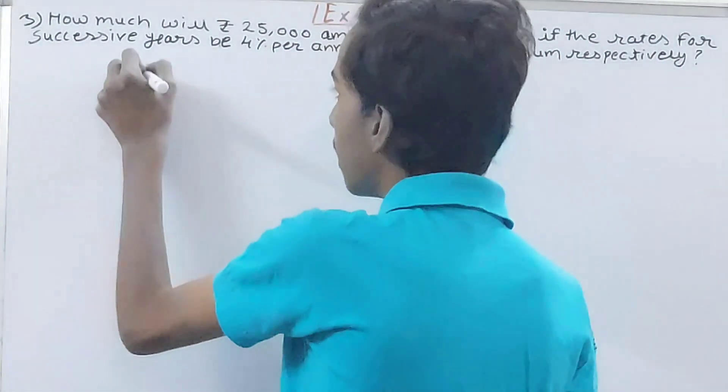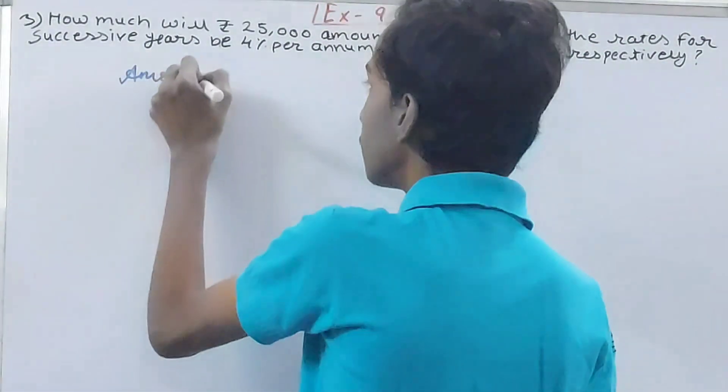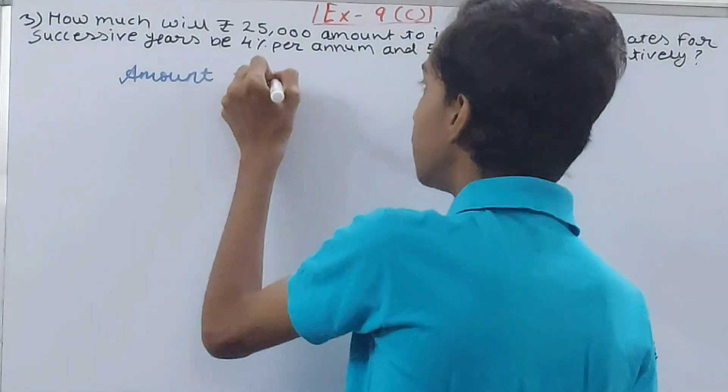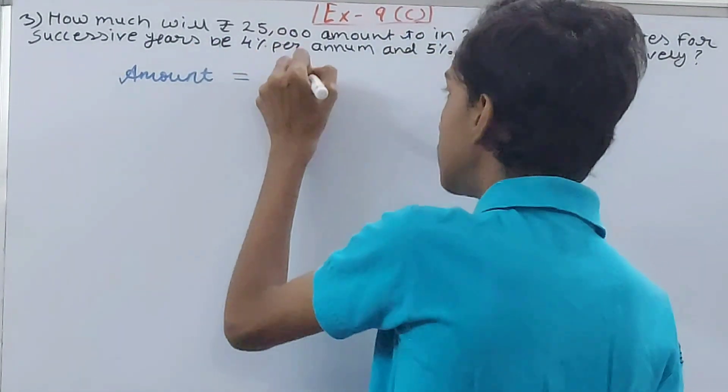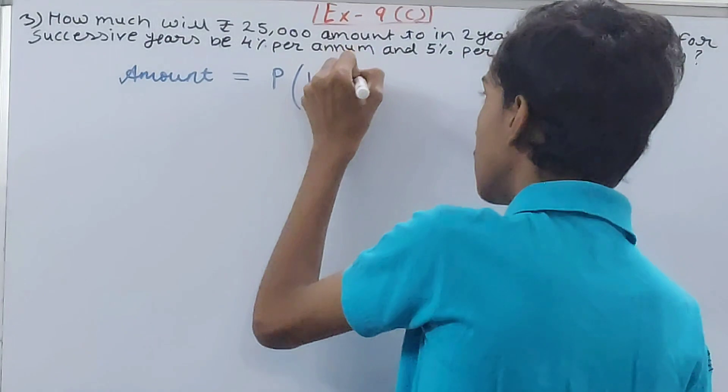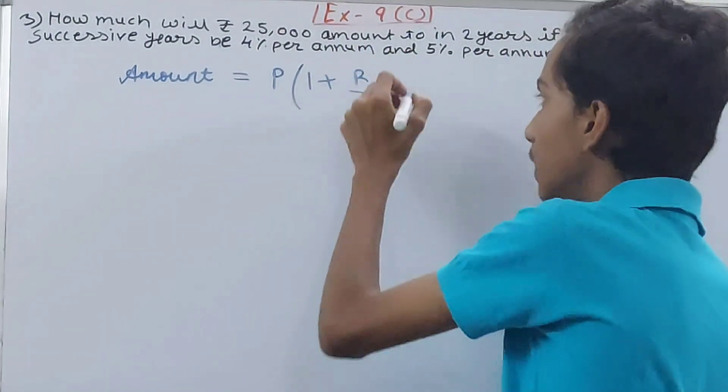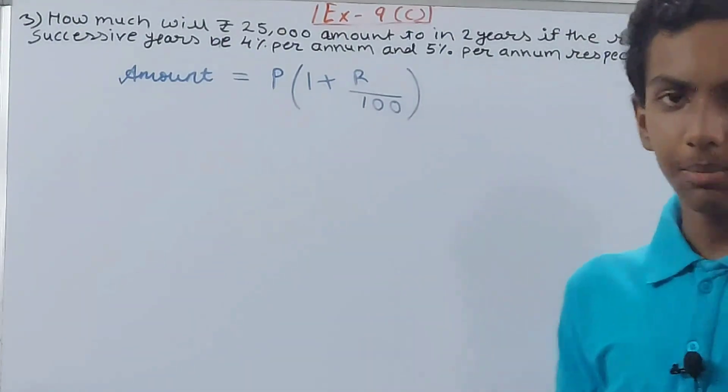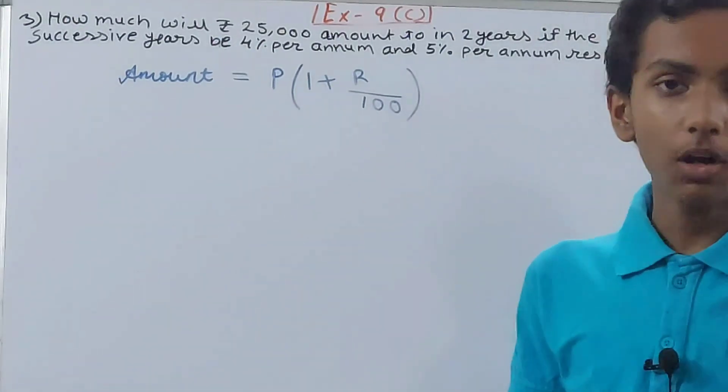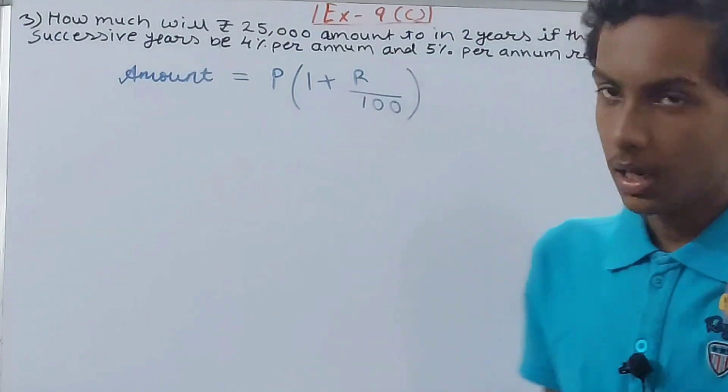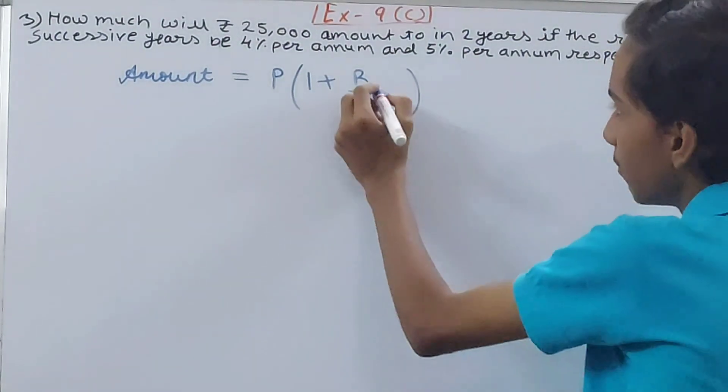formula again. Amount equals P times (1 + R/100) - like we have studied. The first formula will be the same: 1 + R/100. Now we will make a change here. We will not write the time in the power. We will not write 'to the power of n' here. What we will do is leave it as it is, and one